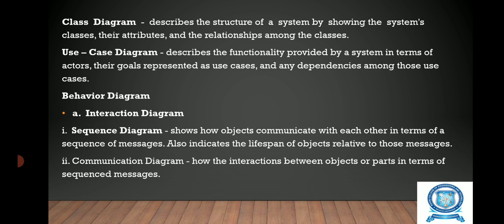The behavior diagram has a subdivision called the interaction diagram, which is of two types: sequence diagram and communication diagram. The sequence diagram shows how objects communicate with each other in terms of a sequence of messages — objects send and receive messages. It also indicates the life span of the object relative to those messages.